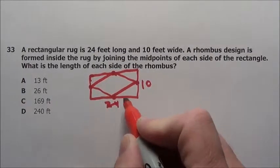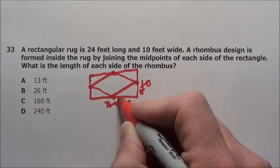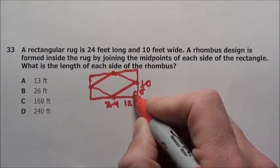When we cut this, this 24 got cut, this leg was 12, this 10 got cut to 5. So it's 12 by 5 right here, a right triangle.